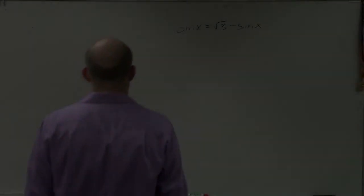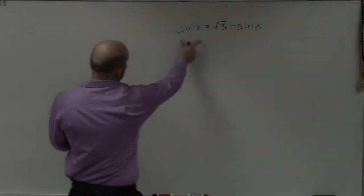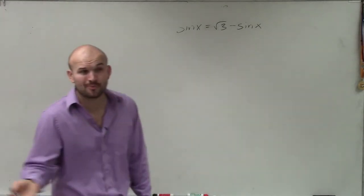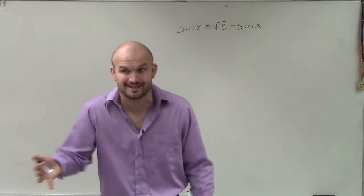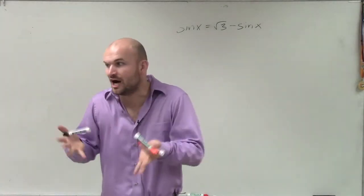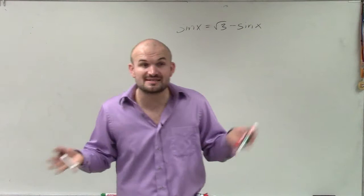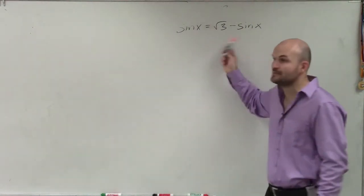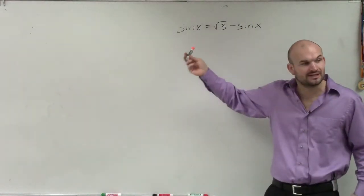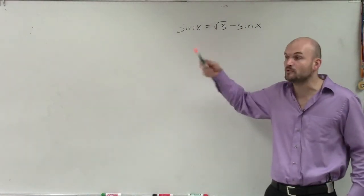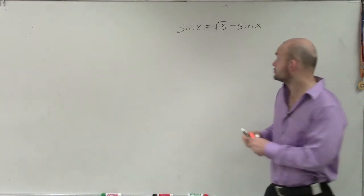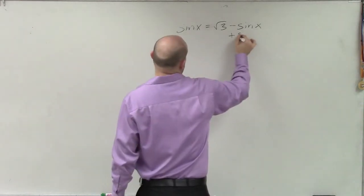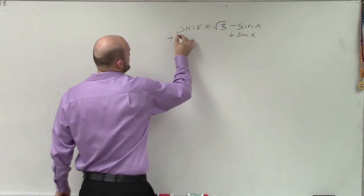If you do a problem like this — what I have is sine of x equals square root of 3 minus sine of x. The other problem was very easy because it was already isolated, but this problem is not isolated. So what I'm going to have to do is get my variable with its functions by itself. To do that, I'll just add sine of x on both sides.